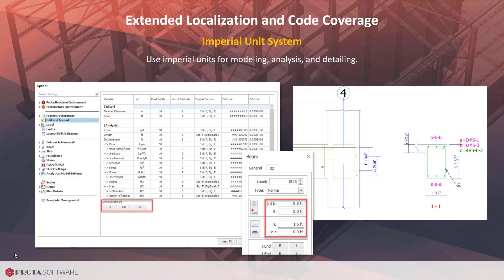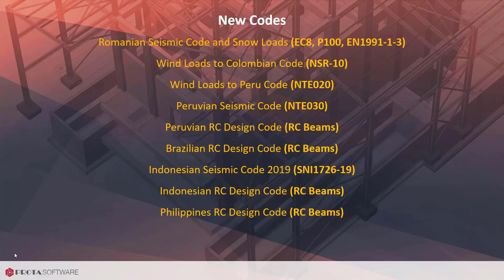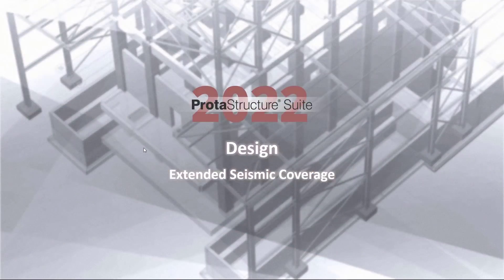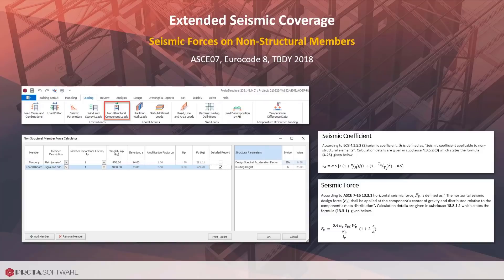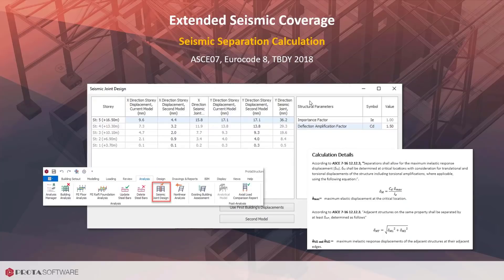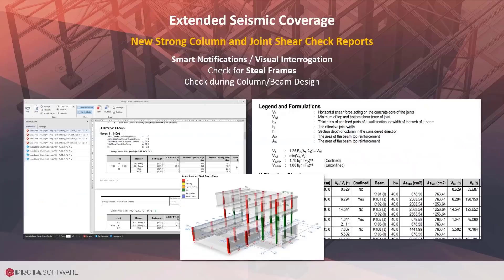New codes are implemented and existing code support is extended in ProtoStructure 2022. ProtoStructure 2022 can calculate forces acting on non-structural members and their connections to the building to ASCE 07, Eurocode 8, and TBDY 2018.